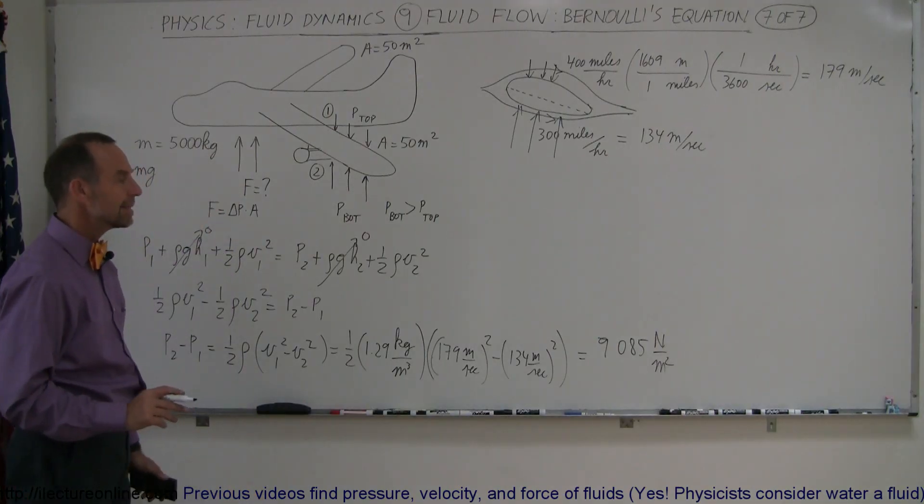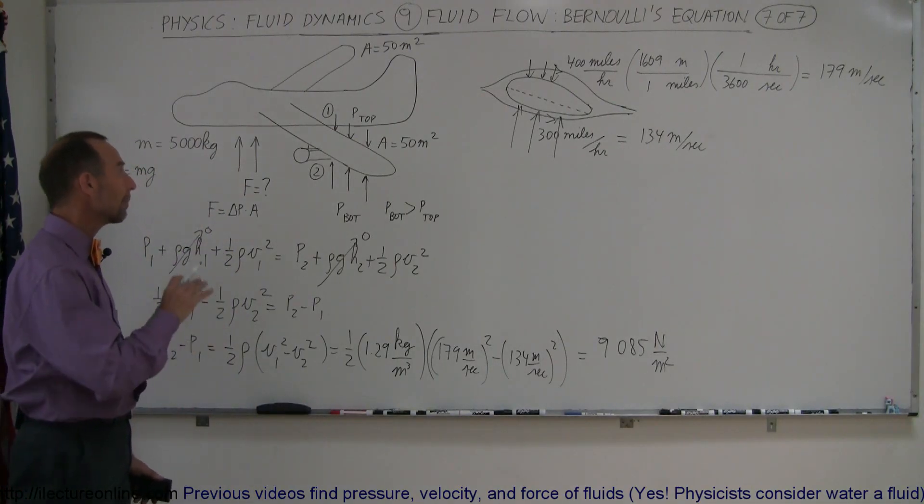Alright, so I can see that this is 9085 newtons per square meter. Alright, so that would be the pressure difference between the top and the bottom.